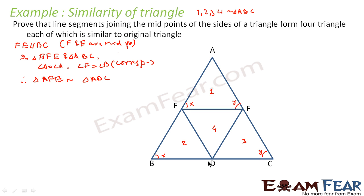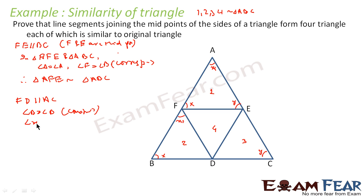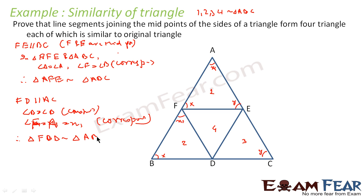Similarly, since F and D are midpoints, we can say that FD is parallel to AC. Since FD is parallel to AC, angle X1 here equals angle X1 there. We can say that angle B equals angle B by construction, and angle F equals angle A — that is, angle F equals angle A equals X1 — as corresponding angles. Therefore, triangle FBD is similar to triangle ABC.